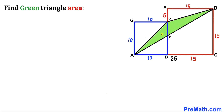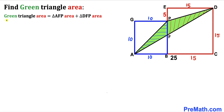In the next step, since we are interested in calculating the area of this green shaded triangle APD, I have divided this big green triangle into two individual triangles: triangle AFP on the left-hand side, and triangle DFP on the other. The area of the green triangle equals the area of triangle AFP plus the area of triangle DFP.